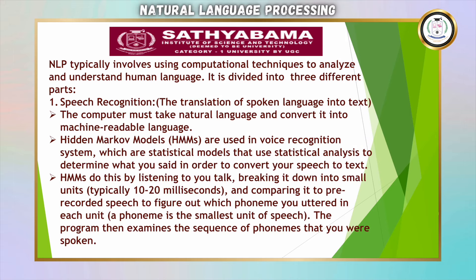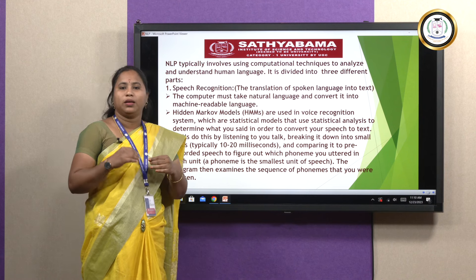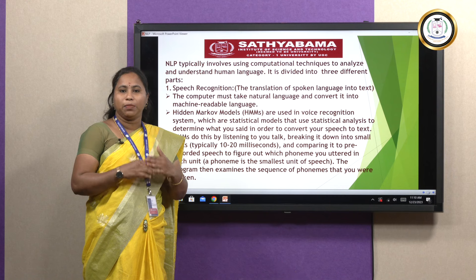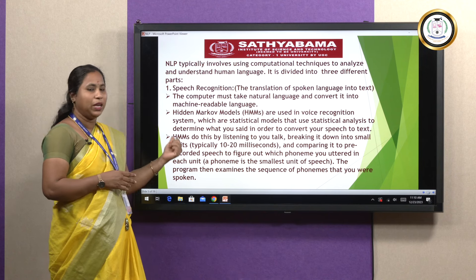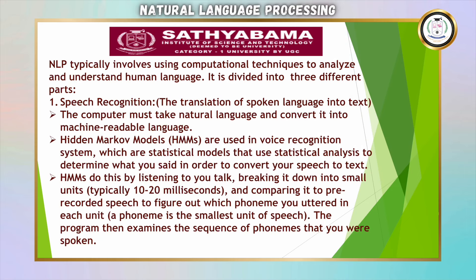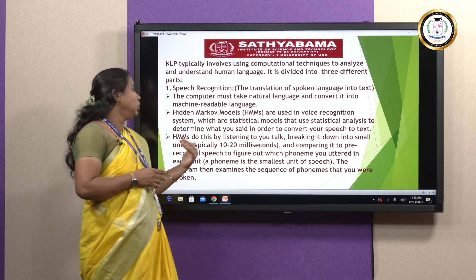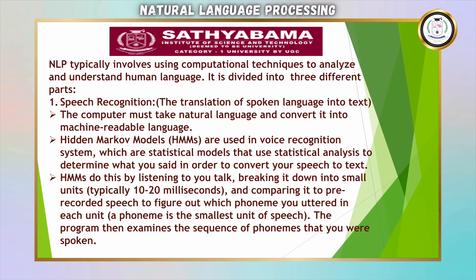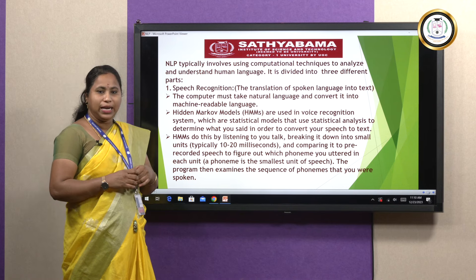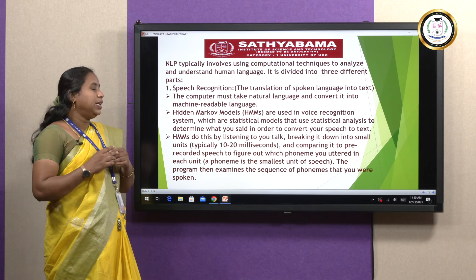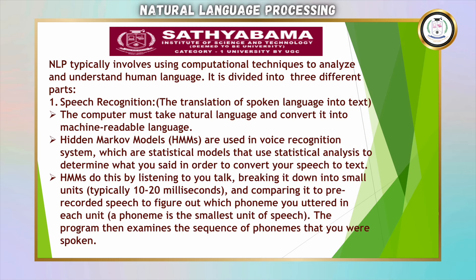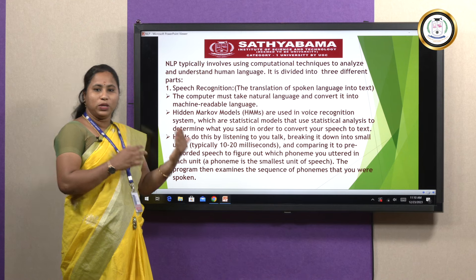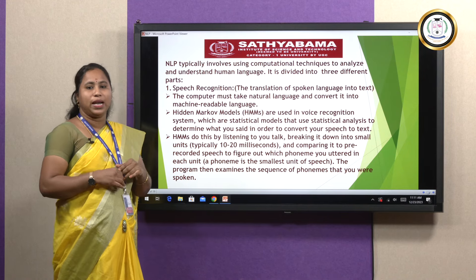The first step is speech recognition. Here, the normal speaking of a human being — whether it is voice or text — is converted into machine-readable language. That is the first step in NLP: the computer must take natural language, either speech or text, and convert it into machine-readable language. This step mainly involves the hidden Markov model, which is a very important technique in speech recognition, along with various statistical models and statistical analysis processes.